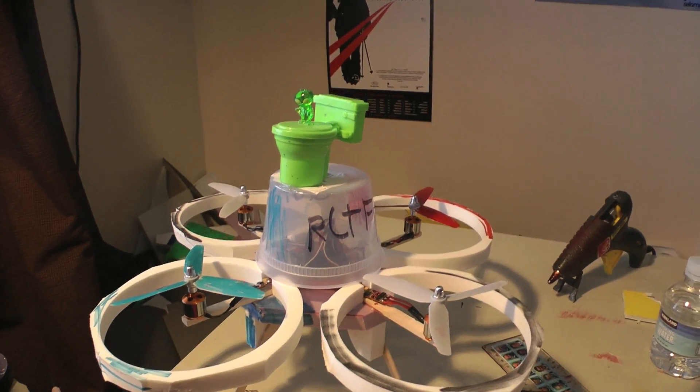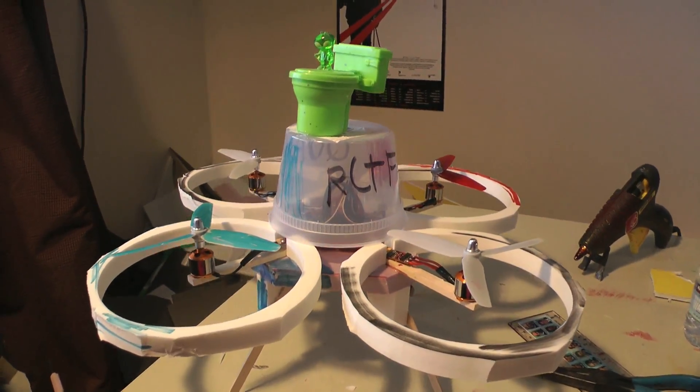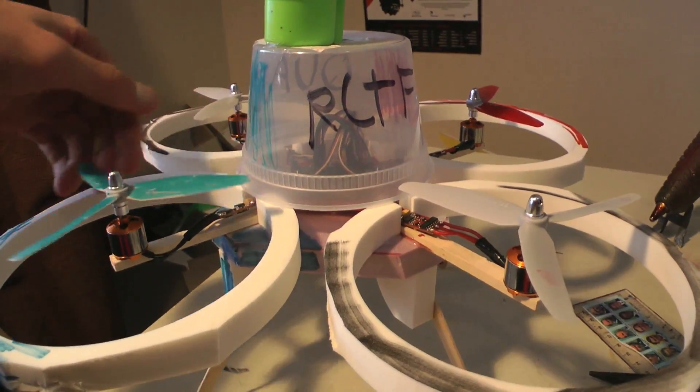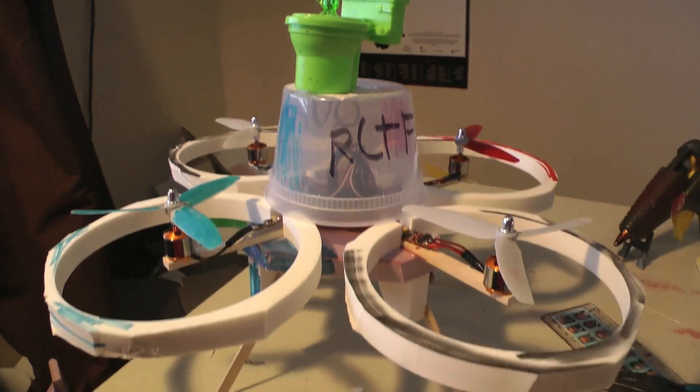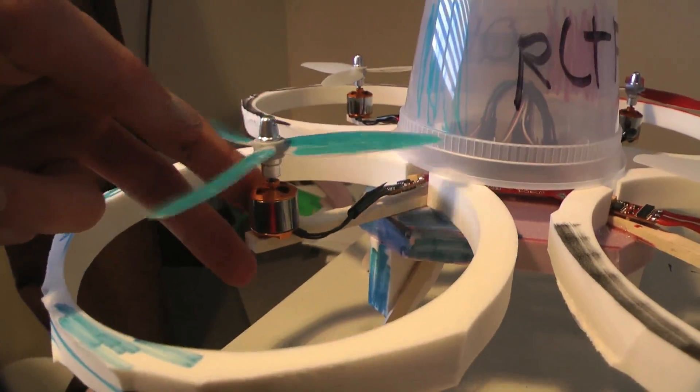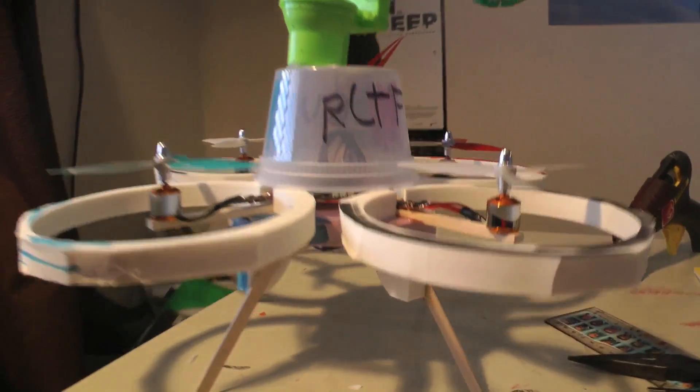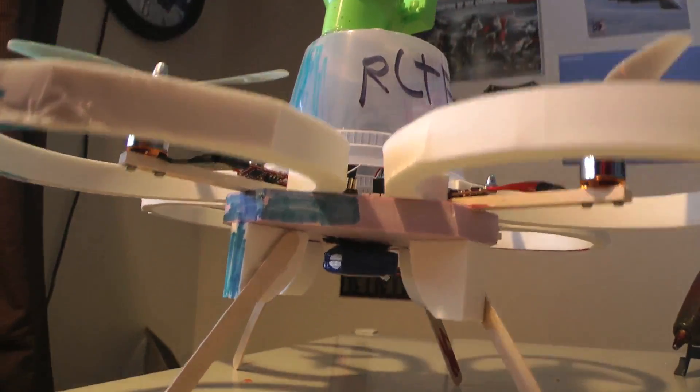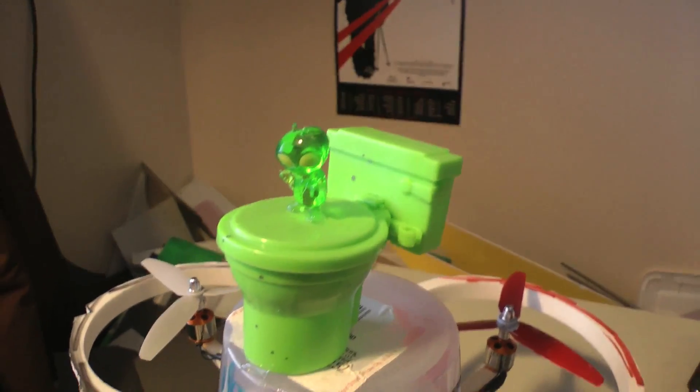This is my little tiny quadcopter. I've got the KK multi-copter controller board in there. I've got these little tiny brushless motors with little props and a little two-cell battery underneath. And up here I've got an alien on a toilet.